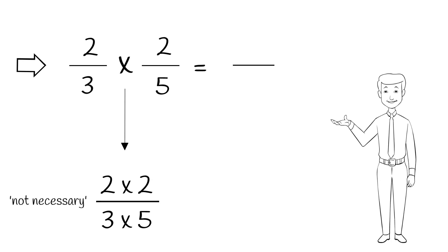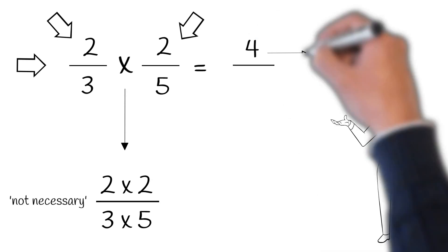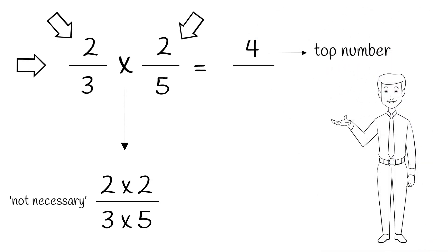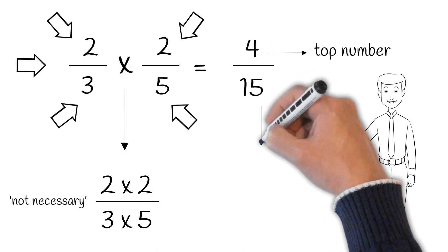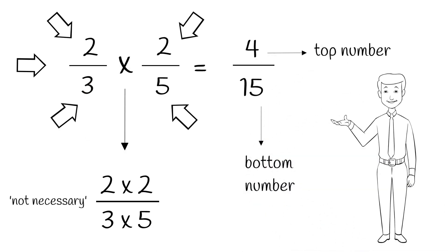Next, we multiply the top numbers, 2 times 2 equals 4. So, 4 is the top number of our answer. And last, we multiply the bottom numbers, 3 times 5 equals 15. So, 15 is the bottom number of our answer. There we have it. 2 over 3 times 2 over 5 equals 4 over 15.